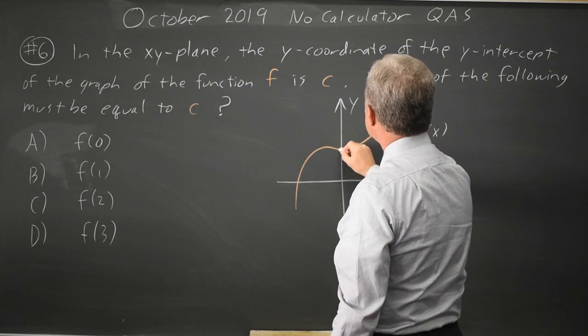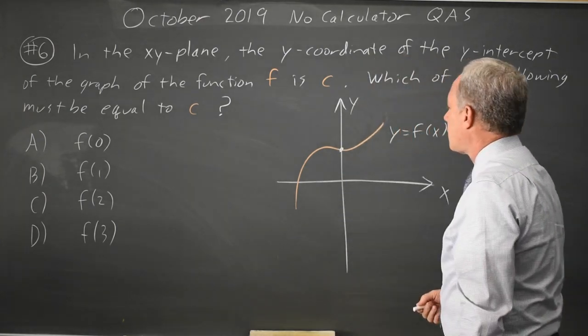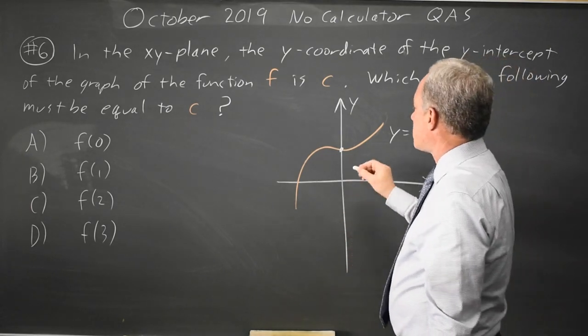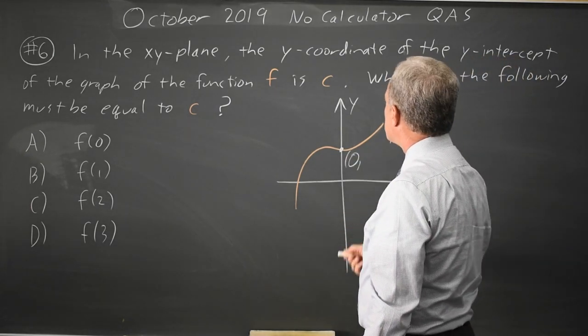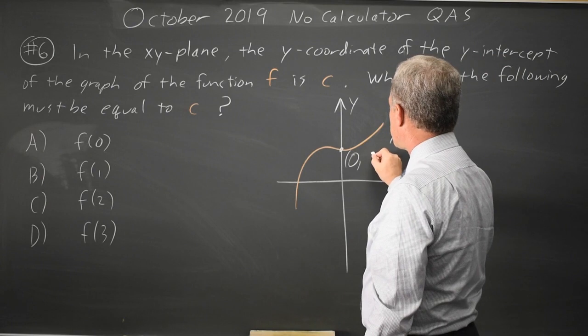and the y-intercept is right here, and the coordinates of the y-intercept are 0 for the x-coordinate, and the y-coordinate we're given is c.